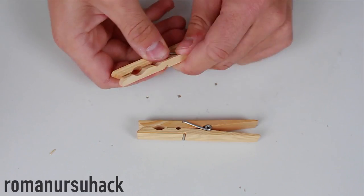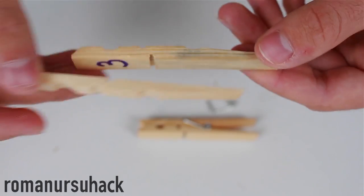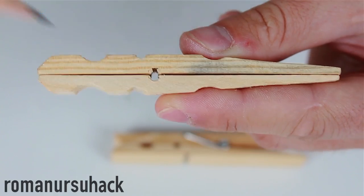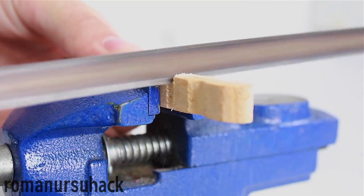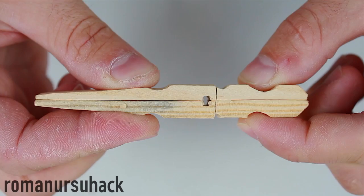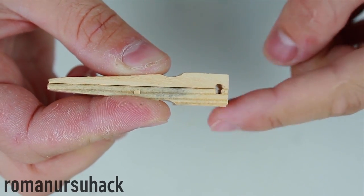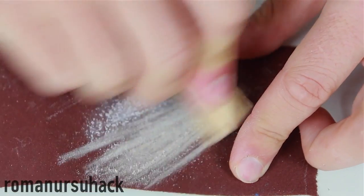So we take two identical pins and take one of them apart. Then turn the pieces over and cut them as shown in the video. Finish them with sandpaper and glue the pieces together.